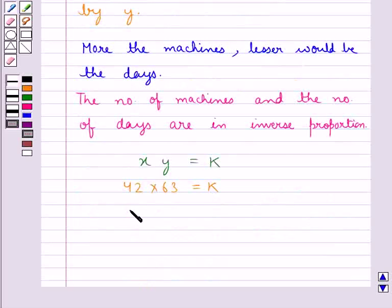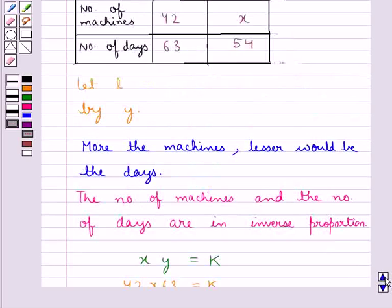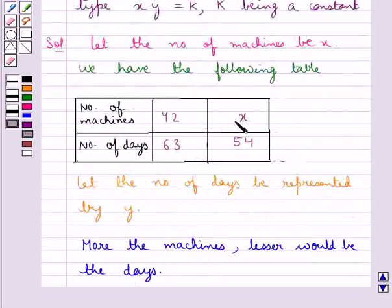Also, x multiplied by 54 is equal to k, where x is the number of machines and 54, that is y, is the number of days.